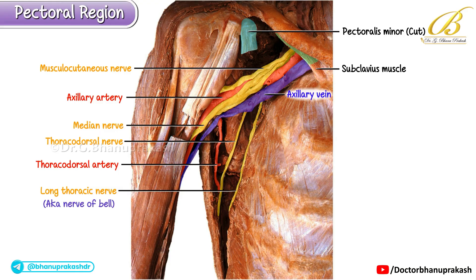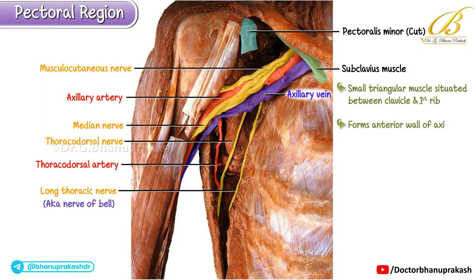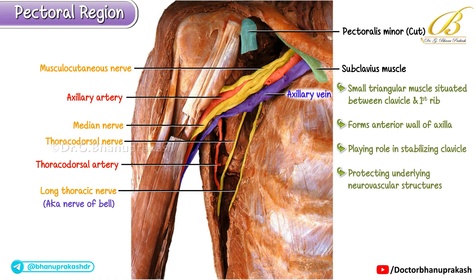Additionally, the subclavius muscle is visible — a small triangular muscle situated between the clavicle and the first rib. Along with the pectoralis major and pectoralis minor, the subclavius contributes to forming the anterior wall of the axilla, playing a role in stabilizing the clavicle and protecting the underlying neurovascular structures.